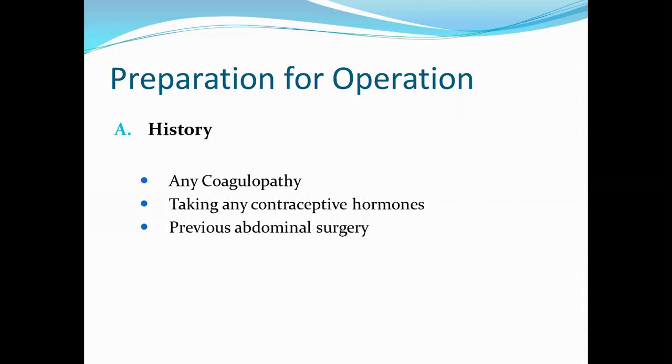Patient taking any anticoagulants are very important. The history of anticoagulation, for example aspirin or warfarin. Similarly, any patient who is taking contraceptive hormones, they cause hypercoagulable states and lead to deep vein thrombosis, so the history of contraceptive hormones must also be taken. Previous abdominal surgery history is also similarly very important in planning the surgery.